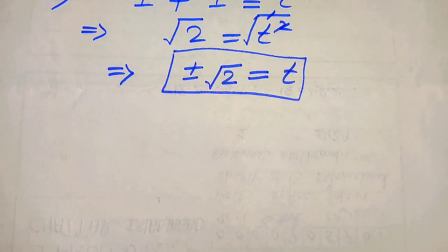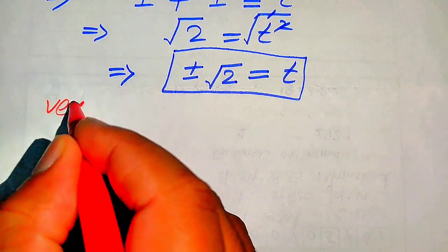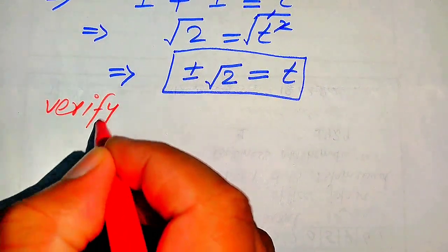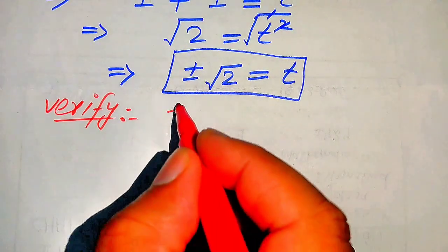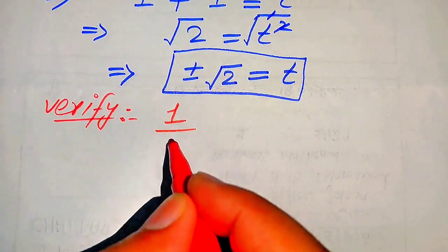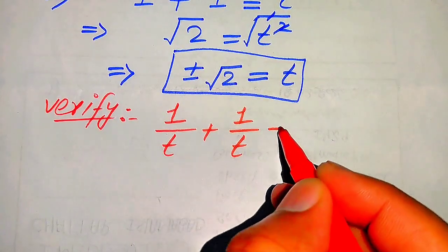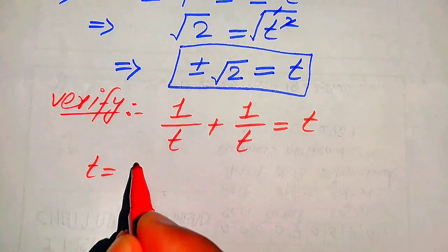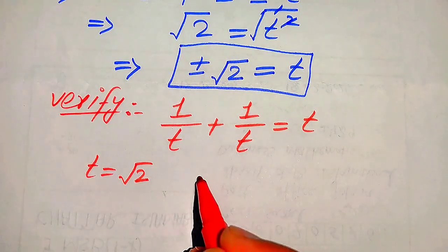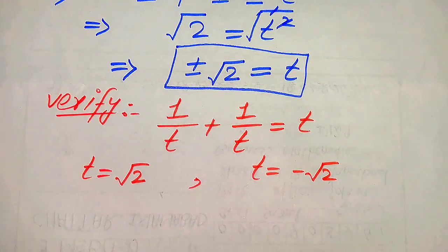Before moving to the second method, we verify these two values of t to check whether they satisfy the given equation 1/t + 1/t = t. We will verify the positive value on one side and the negative value on the other.